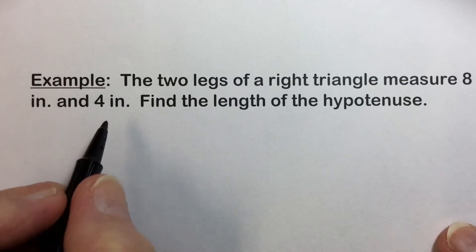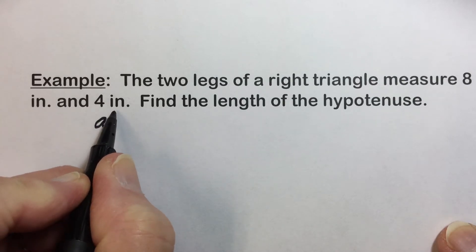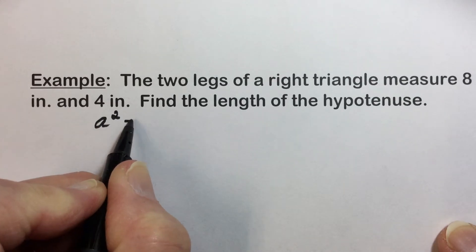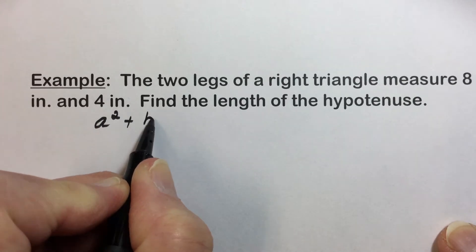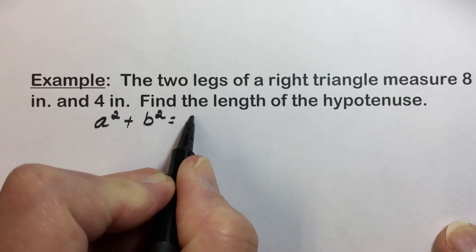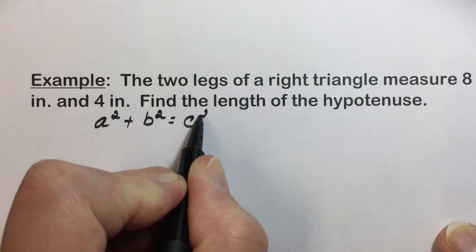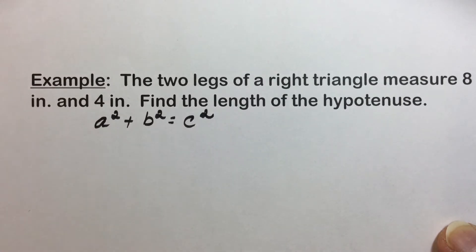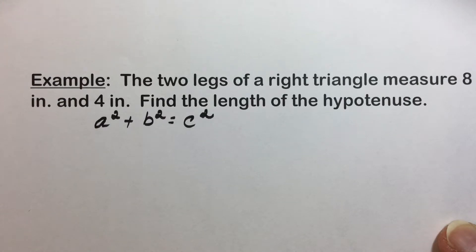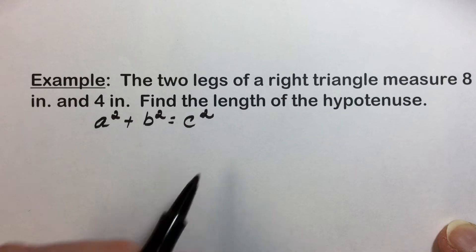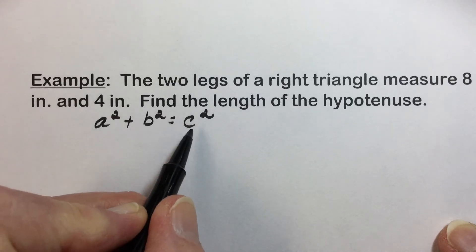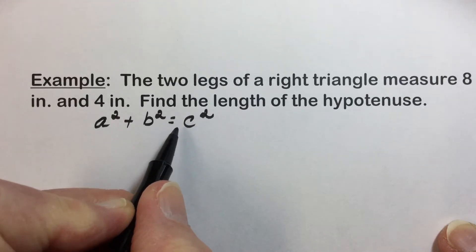When we have similar problems one after another, we can take the basic formula and solve for that missing component once and for all. So here's another option: rather than going through the same procedure, let's take our Pythagorean theorem and solve it for the hypotenuse.